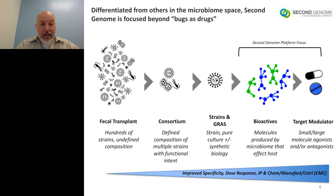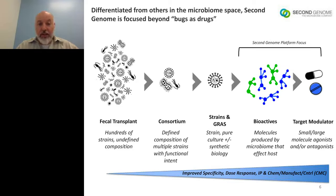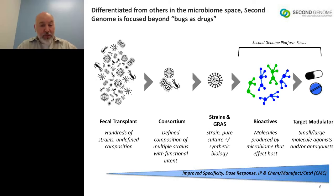The workflow parallels different ways you can branch from raw data to a therapy or diagnostic. On the left side you have fecal transplants with hundreds of strains; more reductionist would be a defined consortium in a pill. Further reduced would be a single strain — the traditional probiotic. Our focus is even more reductionist — the bioactives themselves: molecules produced or expressed by the microbiome that directly affect the host, developed into a pharmaceutical. From the left you have less specificity, less dose-response control, less IP, and harder manufacturing control.